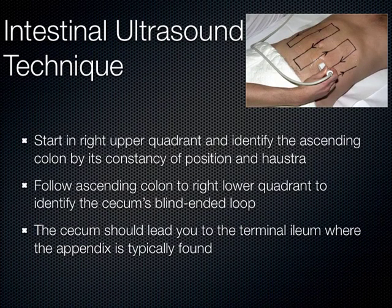Haustra are little indentations in the bowel wall that don't cross all the way across to the other wall. In the small bowel, we have plicae circulares that do cross the entire wall. That's how we quickly differentiate small bowel from large bowel on imaging — looking at haustra versus plicae circulares. That distinction comes into play quite a bit in most fields.